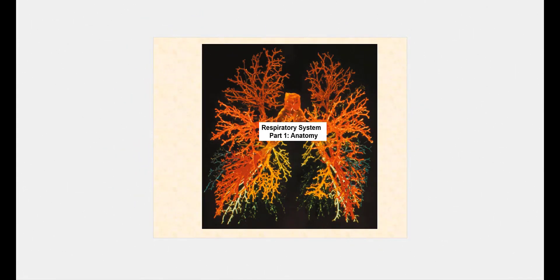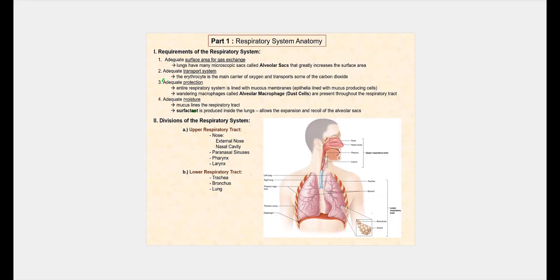We begin the respiratory system by looking at the anatomy of the respiratory system. We begin the discussion by looking at the requirements of the respiratory system, one of which is adequate surface area. The greater the surface area, the greater the site for potential gas exchange. The two gases we will be focusing on will be carbon dioxide and oxygen.